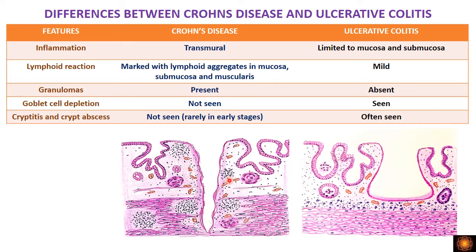Lymphoid aggregates are more common in Crohn's disease, present in the mucosa, submucosa, and muscularis. In ulcerative colitis, there is a mild lymphoplasmacytic infiltrate confined to the mucosa and submucosa, without such lymphoid aggregates. Granulomas are a diagnostic feature of Crohn's disease, found in the mucosa, submucosa, and muscularis, and are absent in ulcerative colitis.